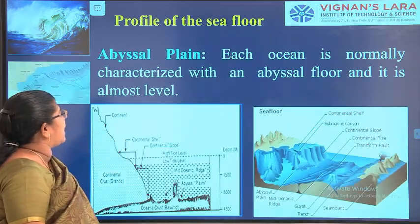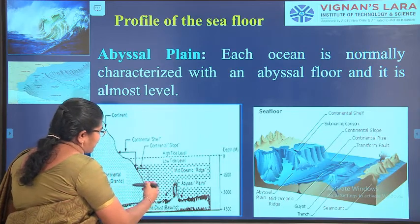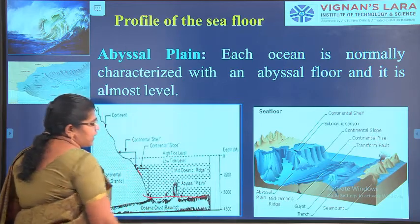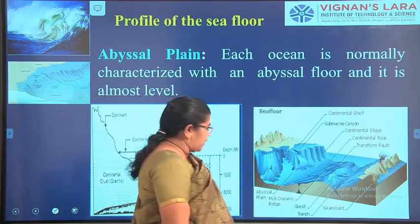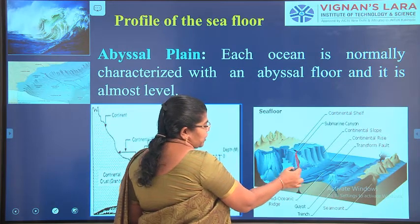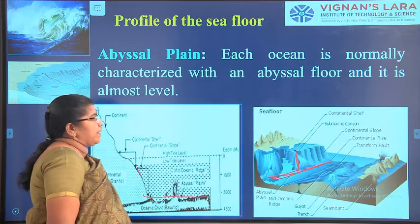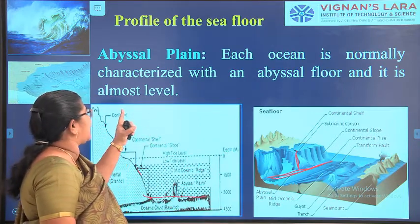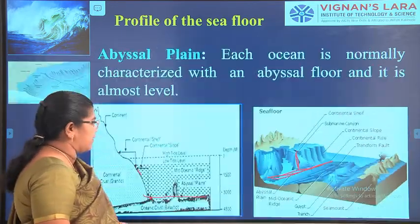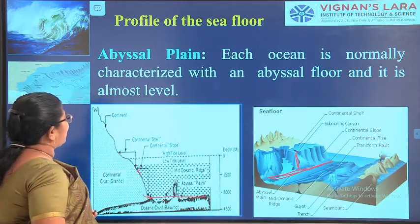The next formation is the abyssal plains. After the formation of the continental shelf, then the continental slope, where it reaches the bottom — this we call the abyssal plain. Each ocean is normally characterized by an abyssal floor, and it is almost level.